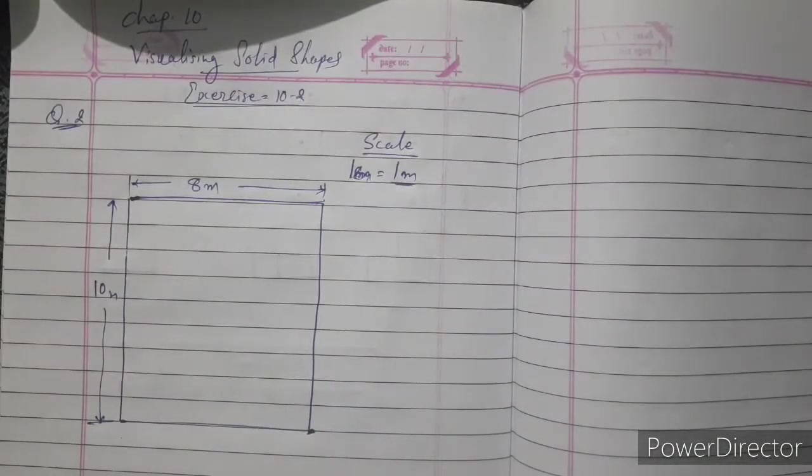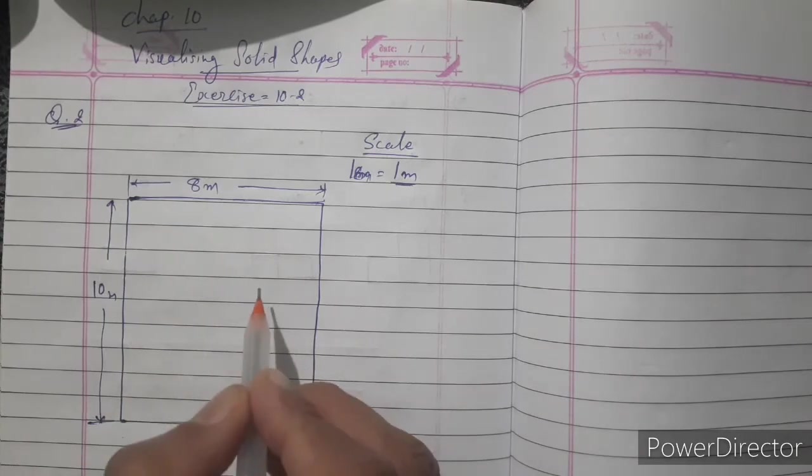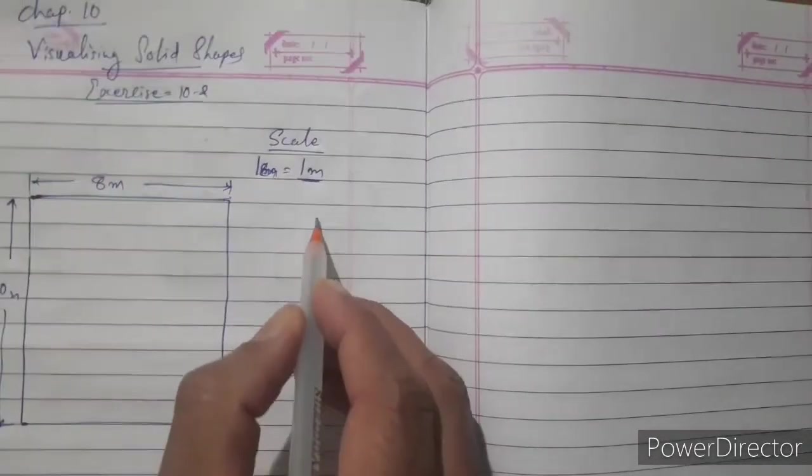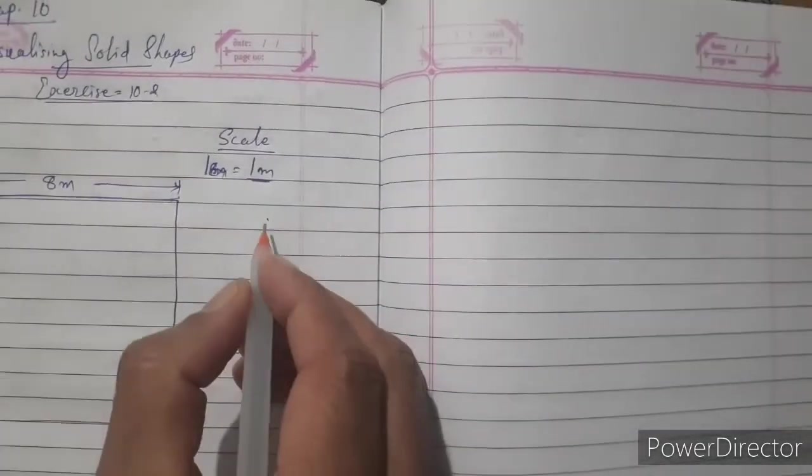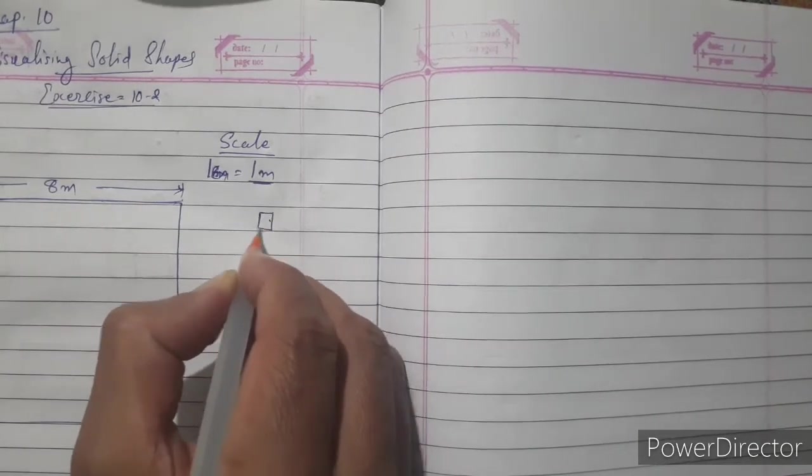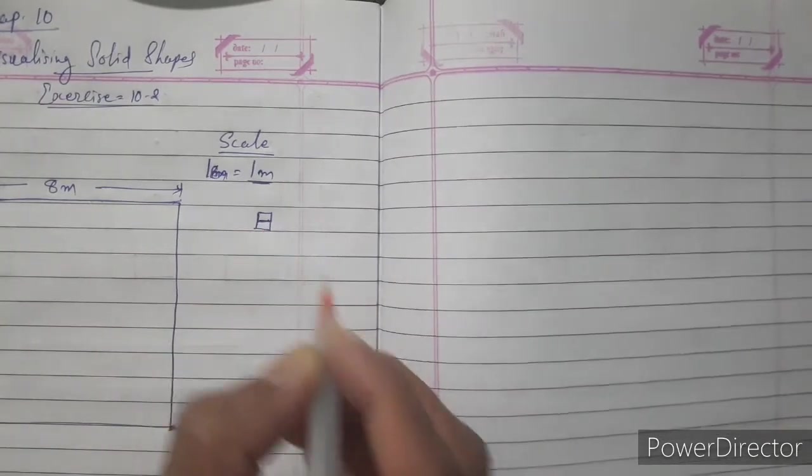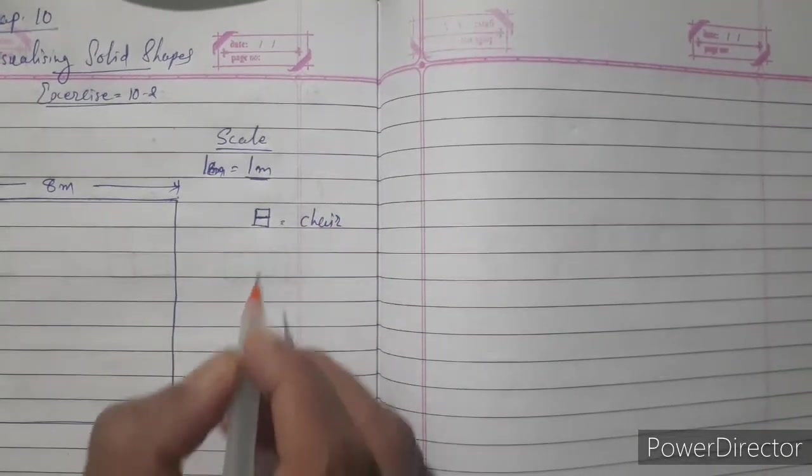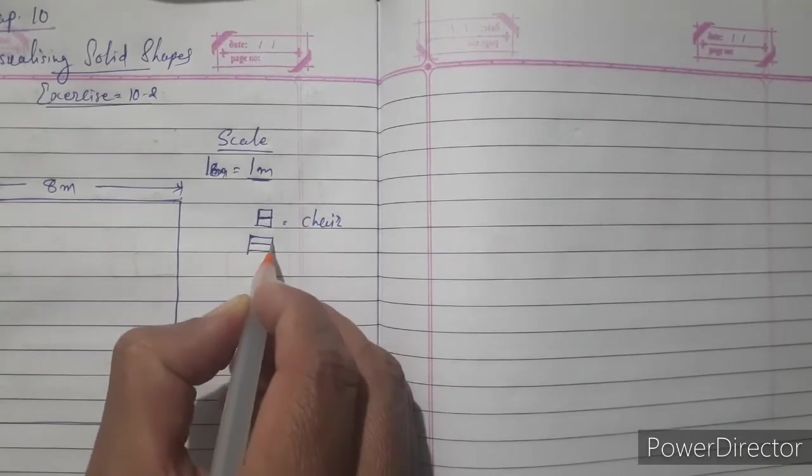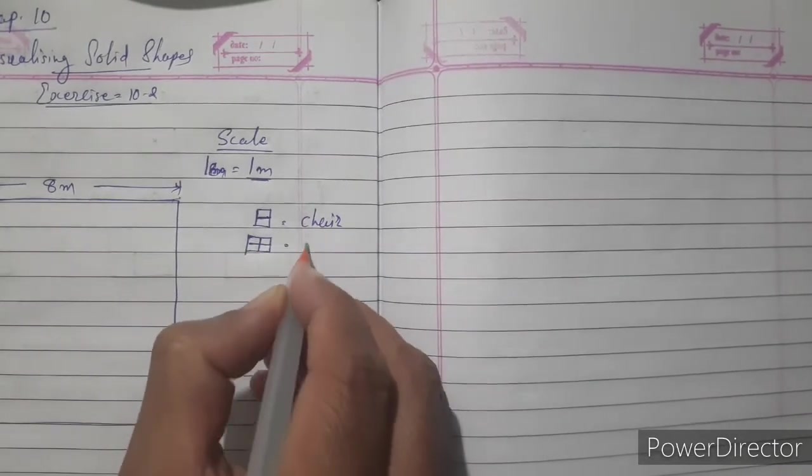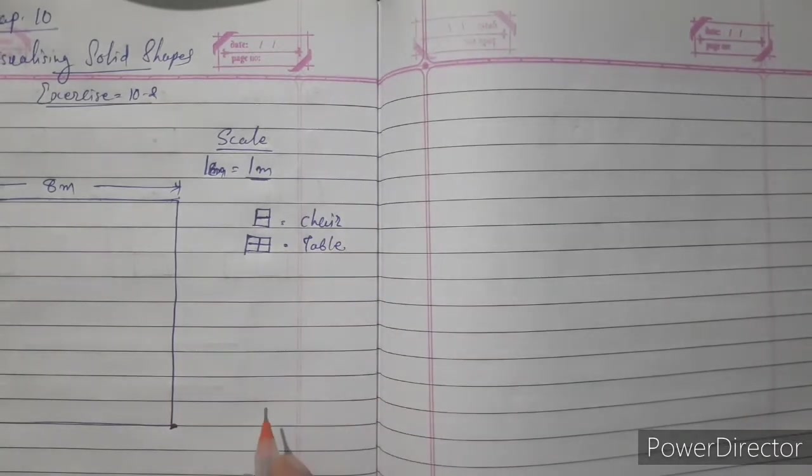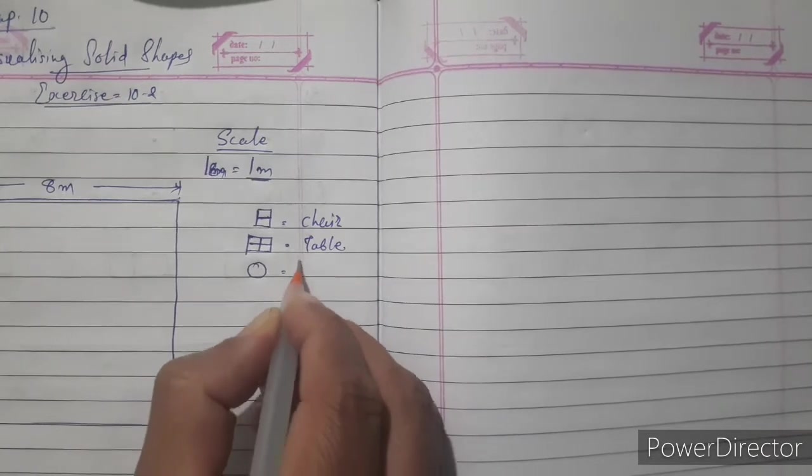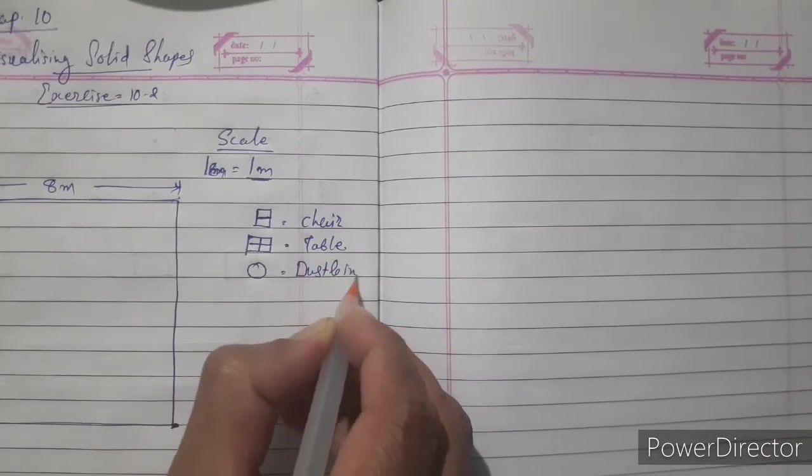Now for represent that one we use some symbols. Here I just write down, look, this type of symbol to represent chair. That is for chair. Now this type of symbol, that is for table. Then circle for dustbin.